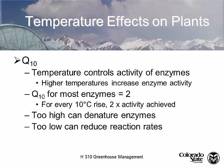This is all based on what's called the Q10 rule, which you've seen in plant physiology: temperature controls the activity of enzymes. We raise the temperature, enzyme activity is greater. The Q10 means that for every 10 degrees C rise in temperature, we get typically a two-fold increase in enzyme activity. Too high and you get heat stress—basically the denaturing of your enzymes, like a fried egg in a skillet. Too low and reaction rates slow to the point where nothing is working.